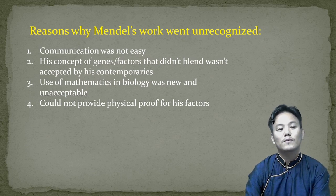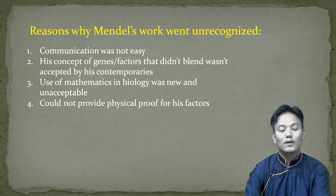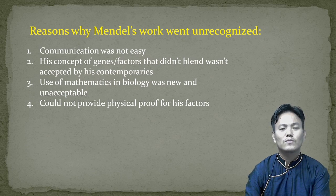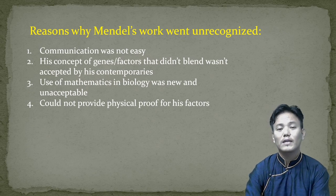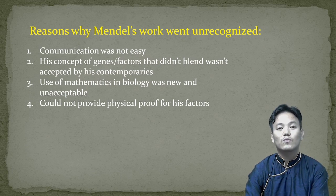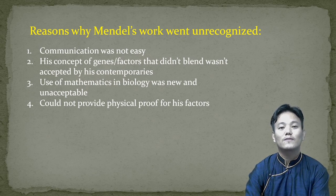The third reason why Mendel's work went unrecognized was his use of mathematics in biology. He used mathematics in biology and that was new and unacceptable during his time. Gregor Johann Mendel was primarily a mathematician — he loved mathematics and therefore used lots of statistics in his hybridization experiment results. We remember those ratios: 3:1 and 9:3:3:1. He used mathematics to support his findings, which was unacceptable for many biologists of his time.